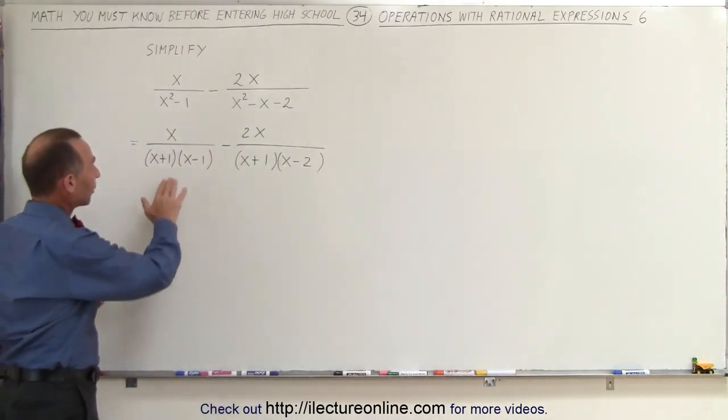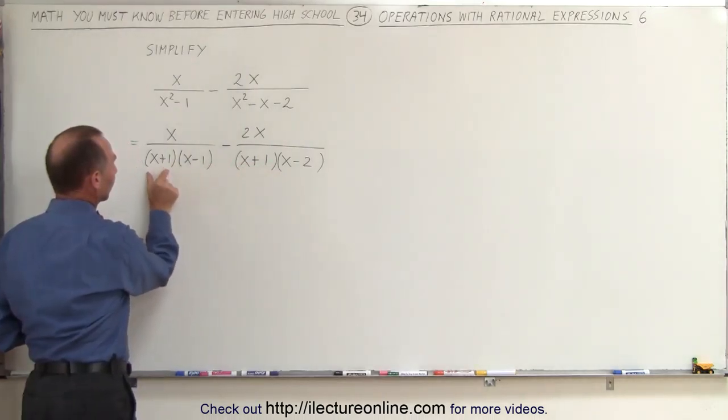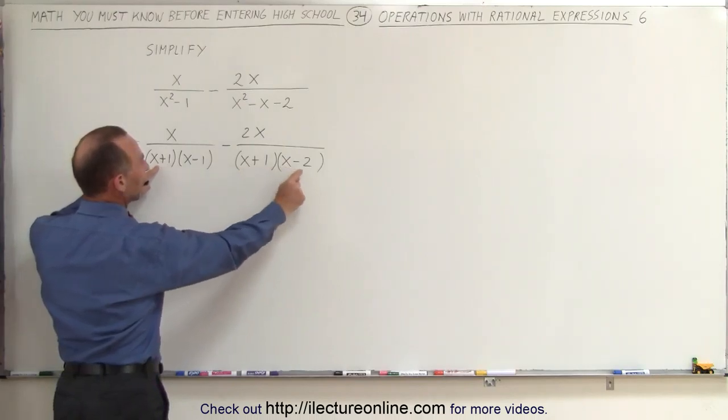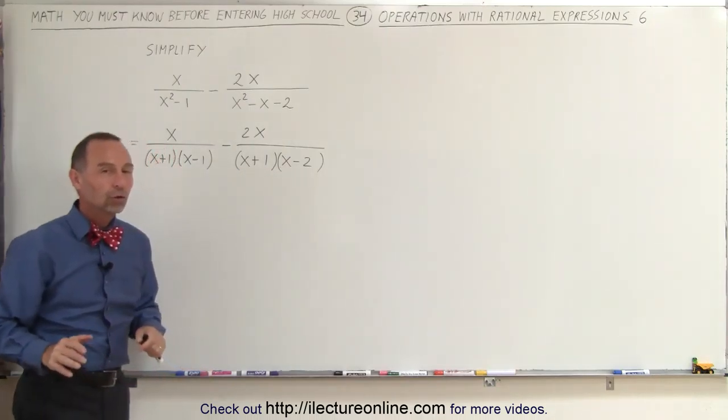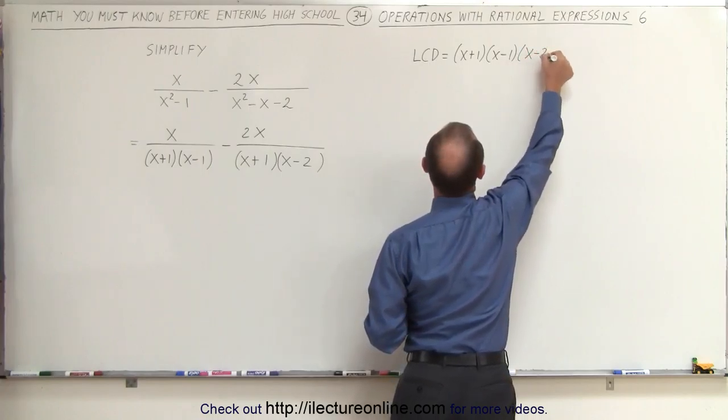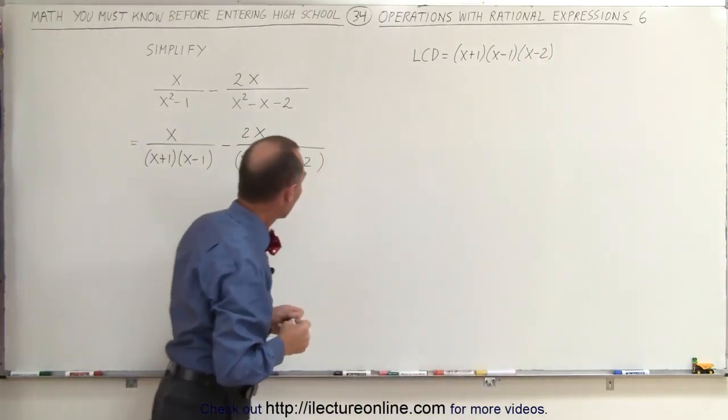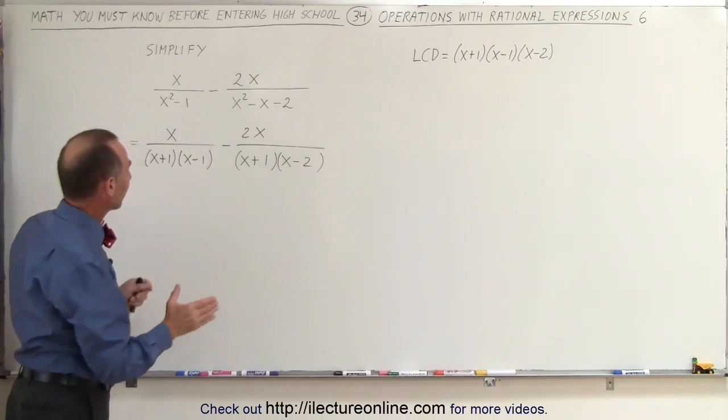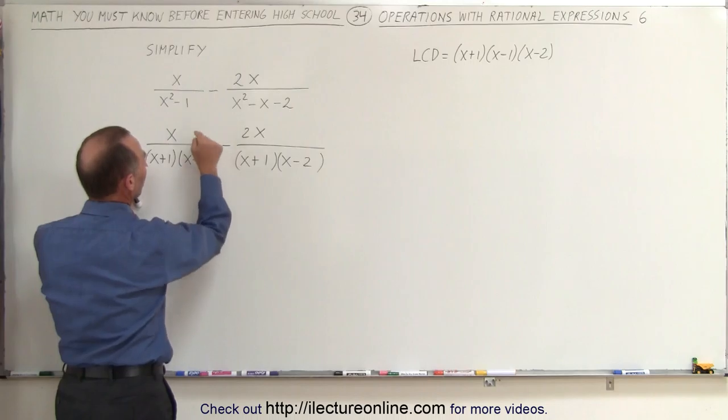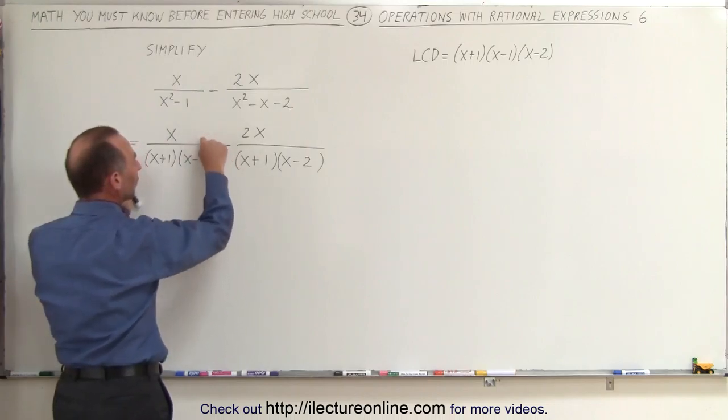Notice if I look at all these two denominators, I can see an x plus 1, an x minus 1, an x plus 1, so these are common here, but there's an x minus 2. So the smallest common denominator, or the least common denominator, can be written as follows. The LCD is equal to x plus 1 times x minus 1 times x minus 2.